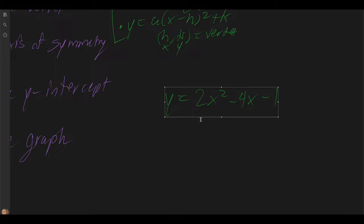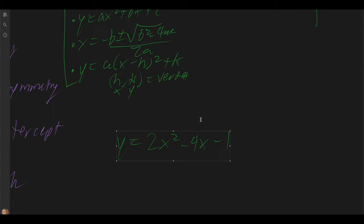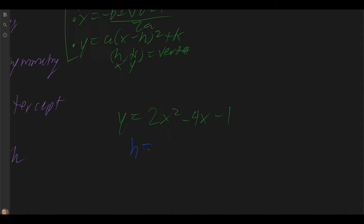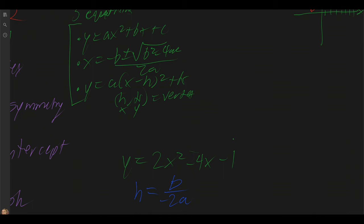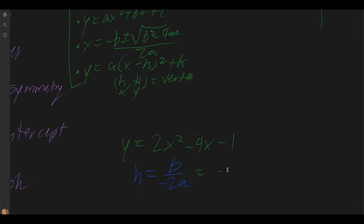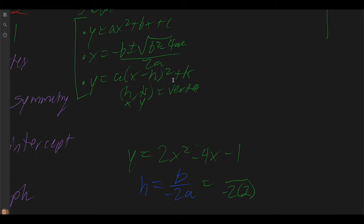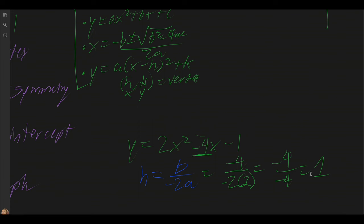In order to figure out what the vertex is, we're going to rely on the equation h equals negative b over 2a. From our given equation, we can identify that a equals 2 and b equals negative 4. So we have negative 4 over negative 2 times 2, which gives us h equals 1.